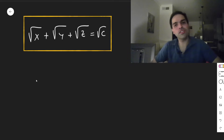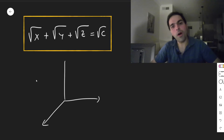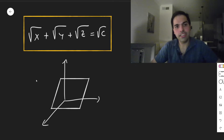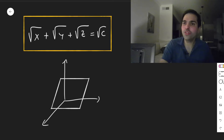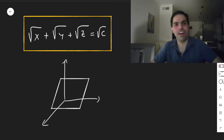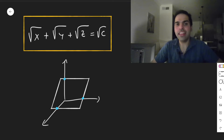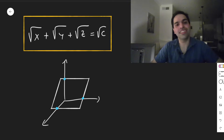Then this is a surface, and for most positive points, this has a well-defined tangent plane. And what I want to show you today is the following really cool fact: if you add the x-intercept, y-intercept, and z-intercept of that tangent plane, then the sum equals c. So it is constant.